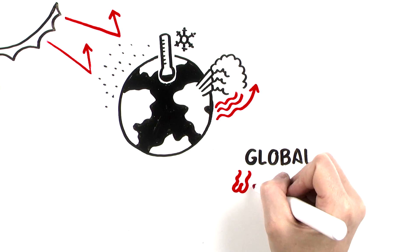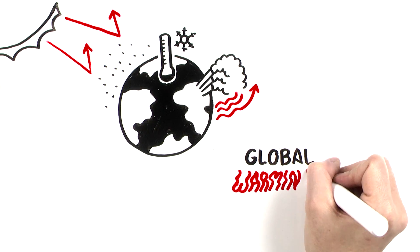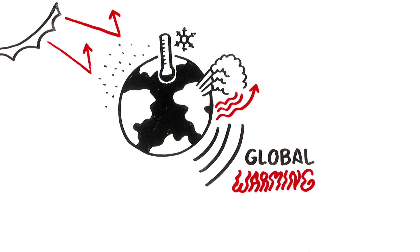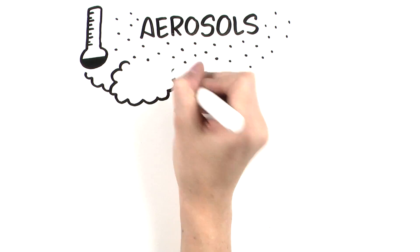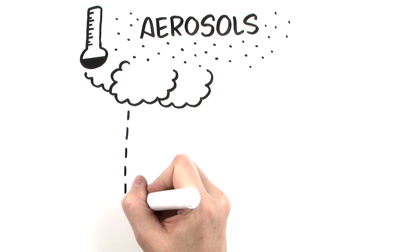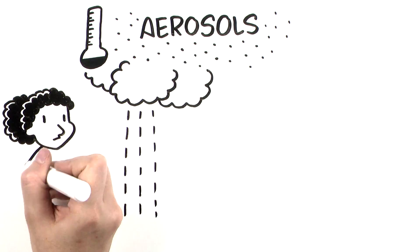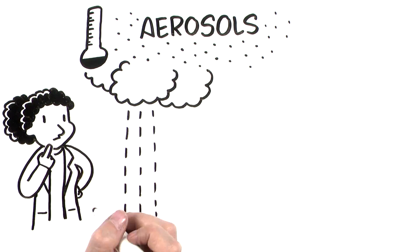At a glance, this might seem good, a way of keeping global warming in check. But aerosols affect more than temperatures. Scientists believe aerosols change weather patterns and reduce rainfall in some regions, although estimating the exact impact of aerosols on the climate is still tricky.